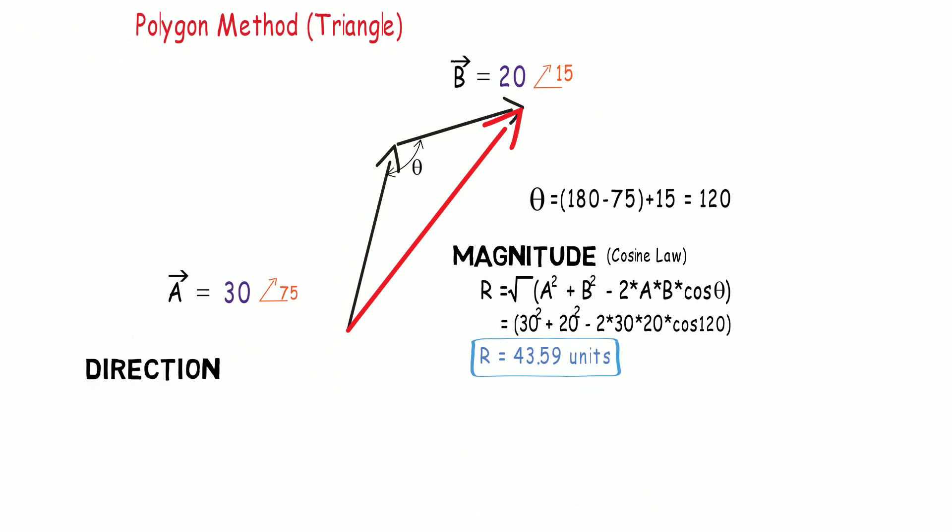The direction of the angles can be found out using the sine law for a triangle. Let us say that the angle made here is alpha and the other angle is beta. Using sine law, we can develop a relation which will state that the ratio of the vector to sine of angle made by the other two sides will be constant. So, vector B upon sine of angle alpha will be equal to vector R divided by sine of theta. This should be enough to solve for the value of alpha.